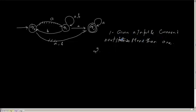Given an input symbol and a current state, I can switch to more than one state, and that is the non-determinism about it.